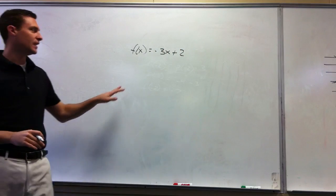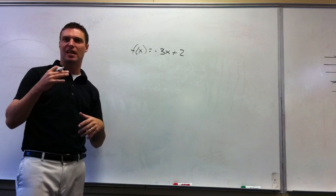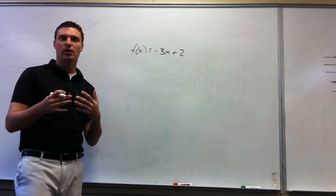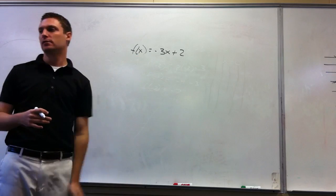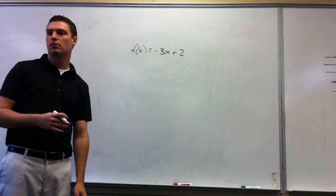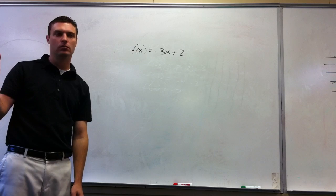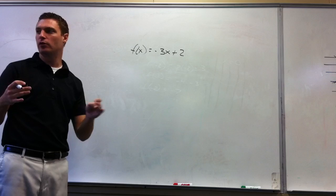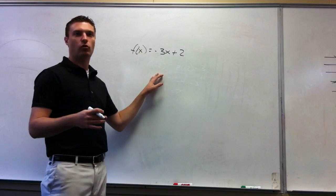Now remember I told you that f of x is functioning the same as y. So just treat this like y equals negative 3x plus 2, like slope-intercept form. You can graph this the same as you would in slope-intercept form.